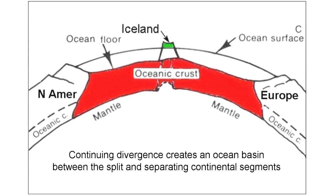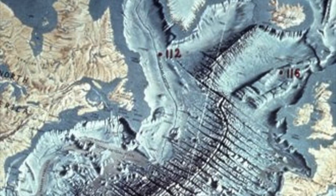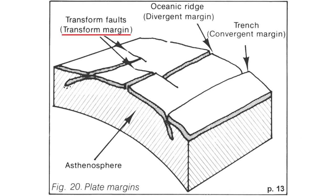Iceland is right along that mid-Atlantic ridge and is exposed above sea level. Coming back to this map, here's Iceland up here, with the mid-Atlantic ridge coming to the southwest, then a displacement to the east, and then it continues down the length of the Atlantic Ocean. We also have the transform margin.